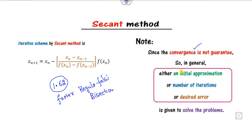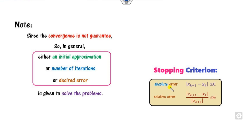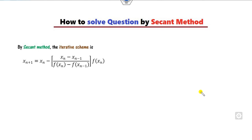Remember, when you are solving using the secant method, you either know the initial approximation, you know the number of equations you want to perform, or you know the desired error. The desired error means the absolute error must be less than a given value, or the relative error must be less than a given value.